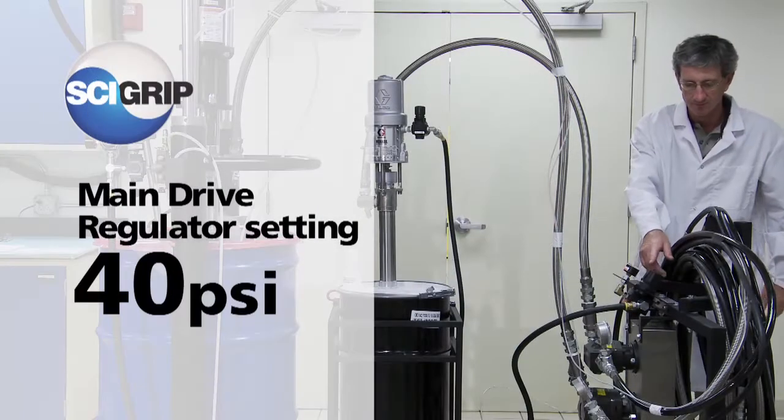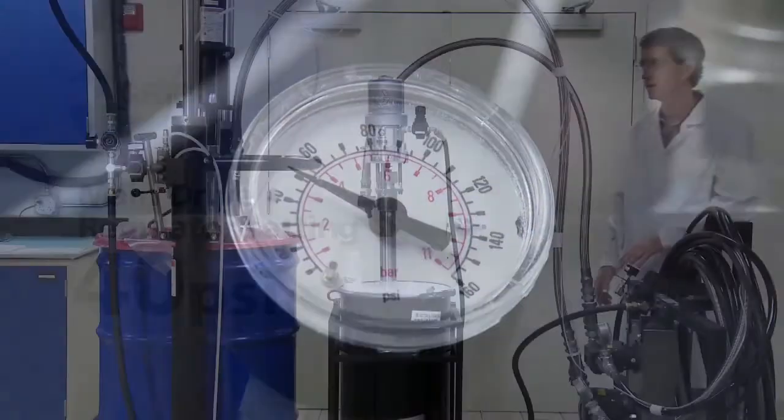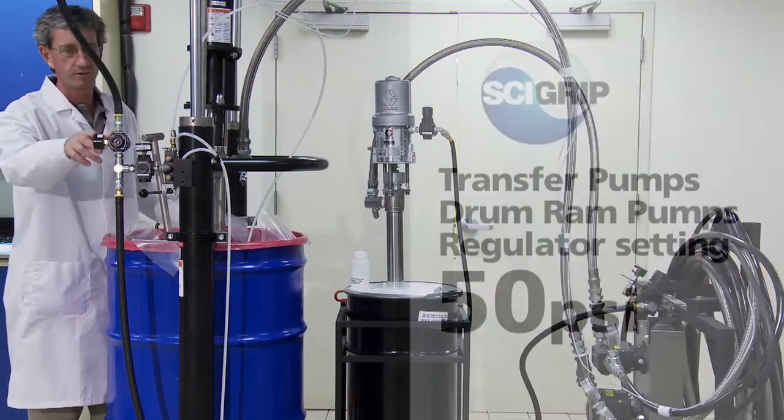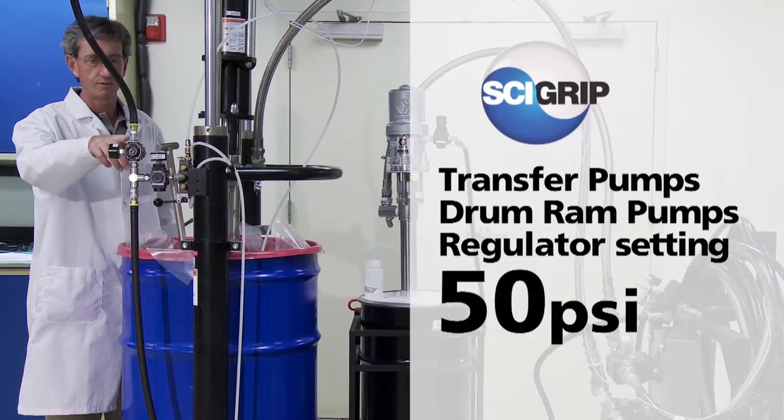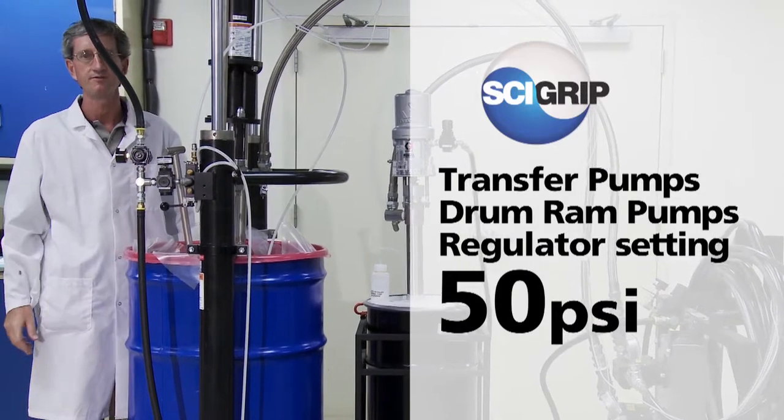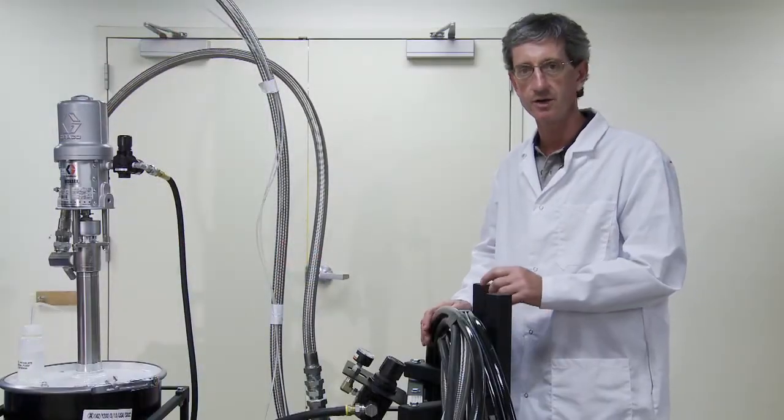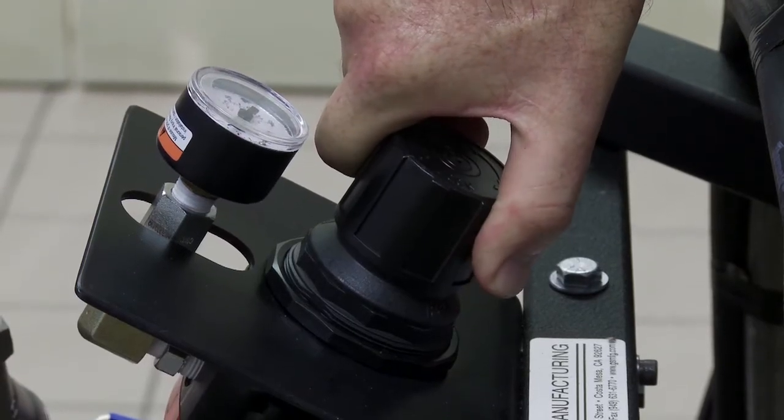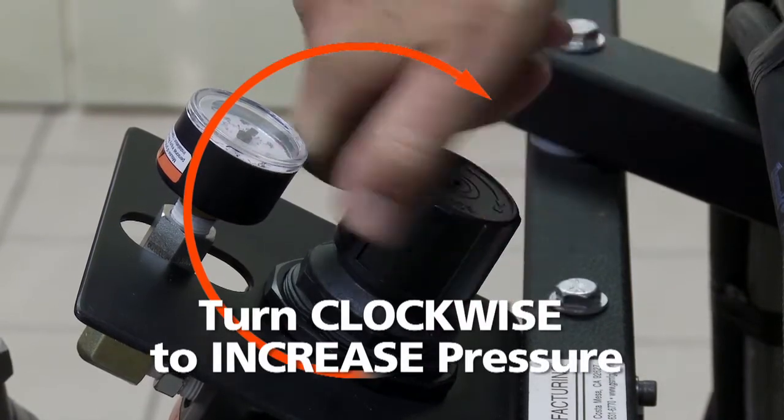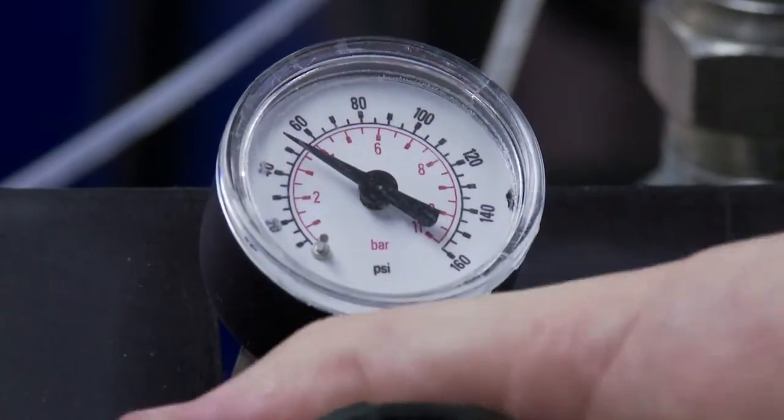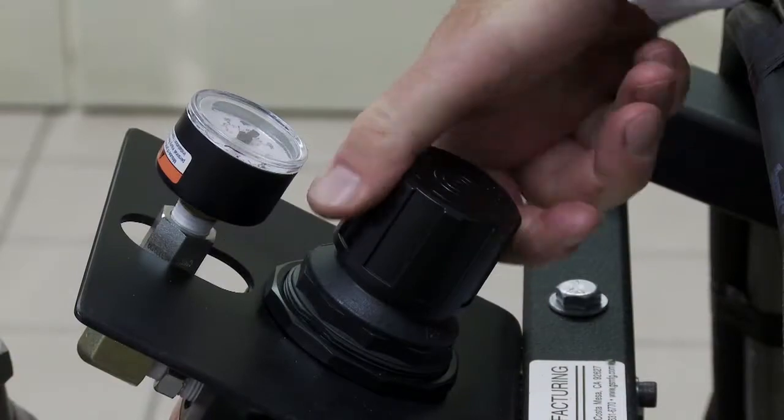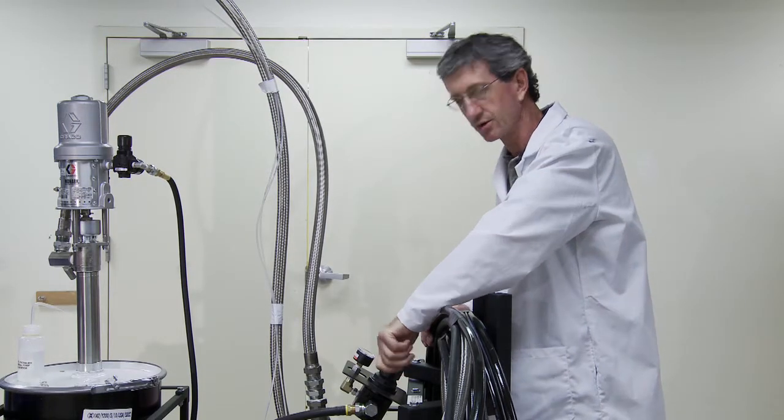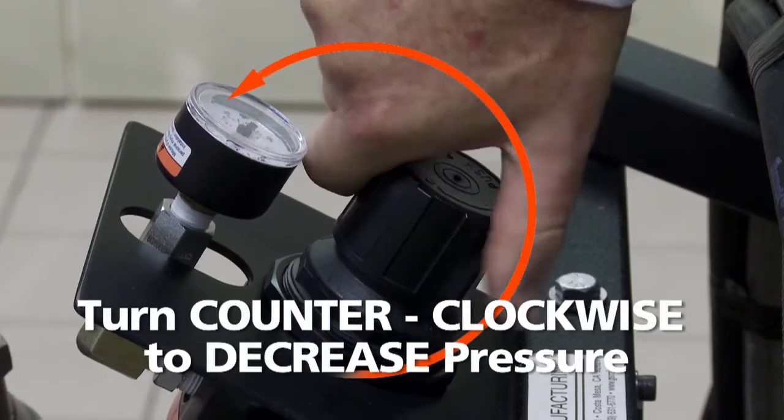To adjust the regulators, to increase the pressure, you'll pull the knob out slightly and turn it clockwise. To reduce the pressure, you'll pull the knob out slightly and turn it counterclockwise until you reach the desired setting.